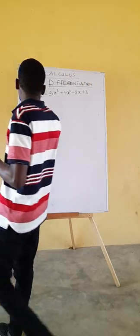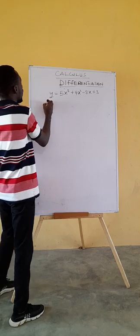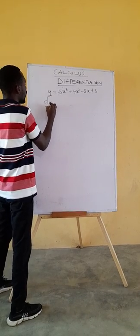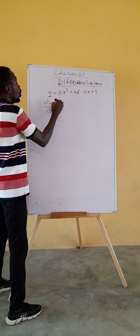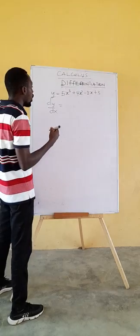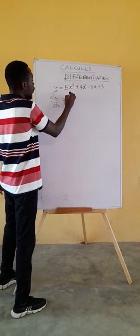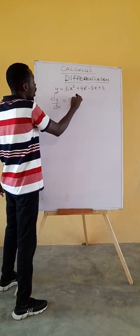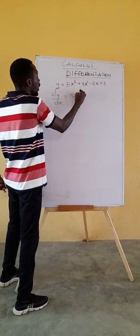Now come with me. Remember we said to find the derivative, you will let the exponent multiply the coefficient of the variable. So 3 multiplied by 5 becomes 15 and subtract 1 from the exponent, that's 2.